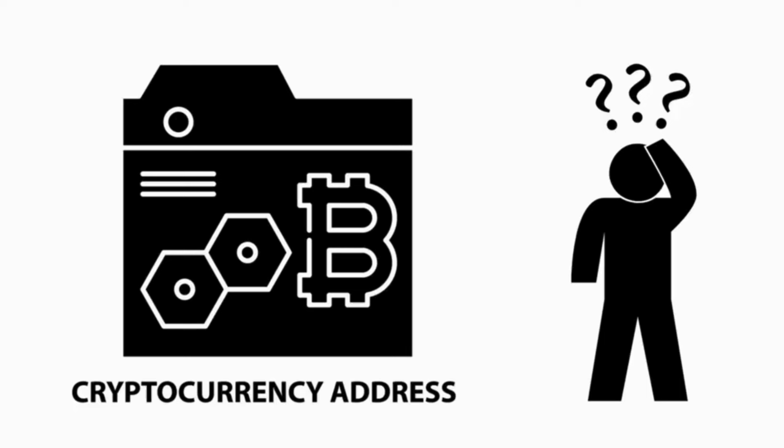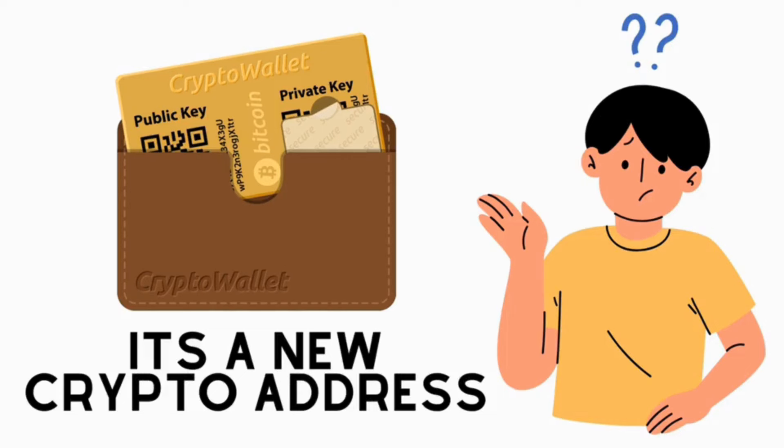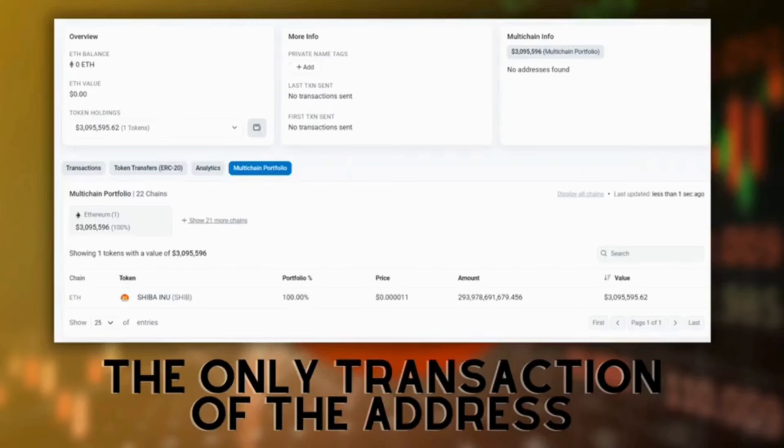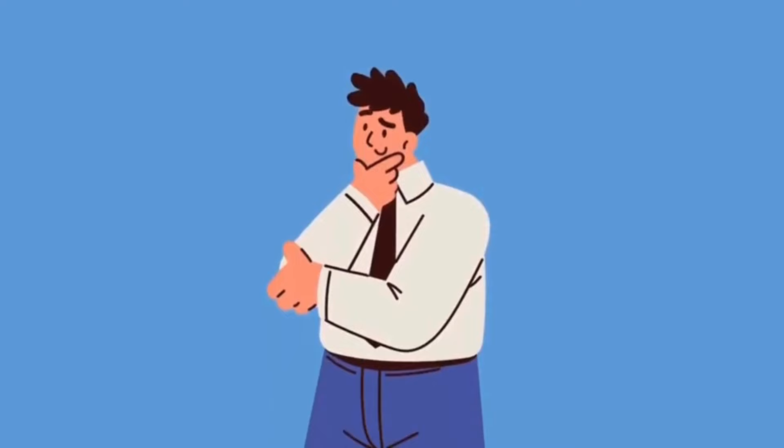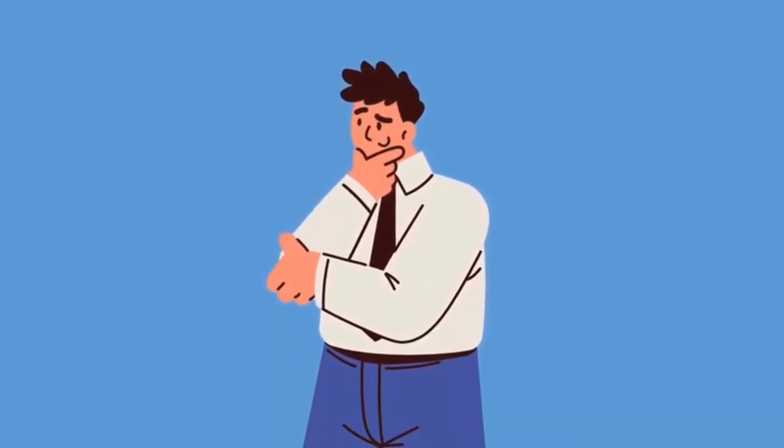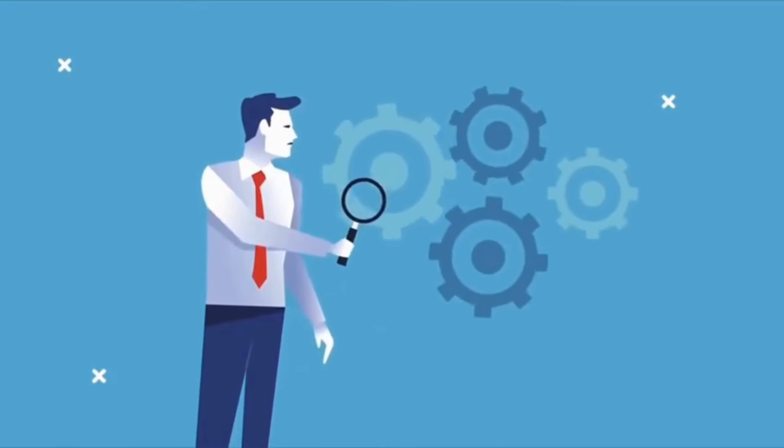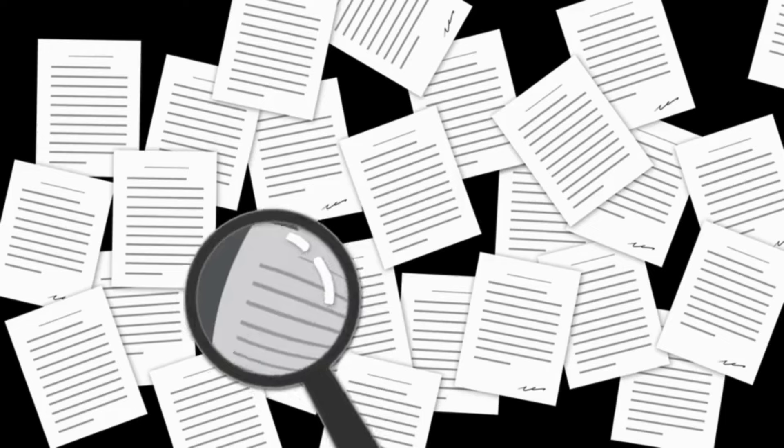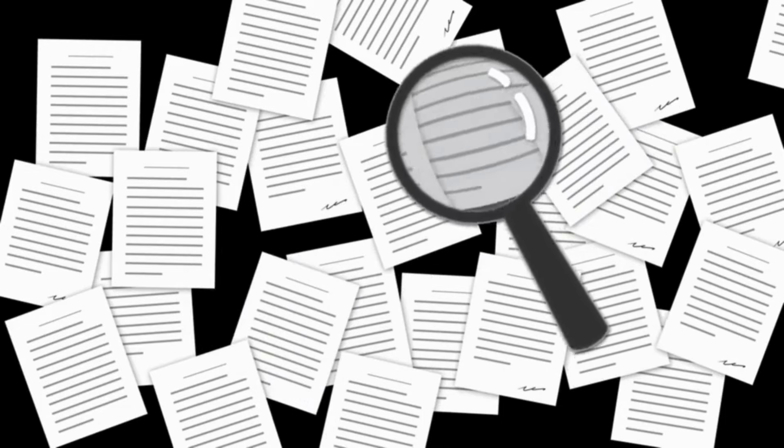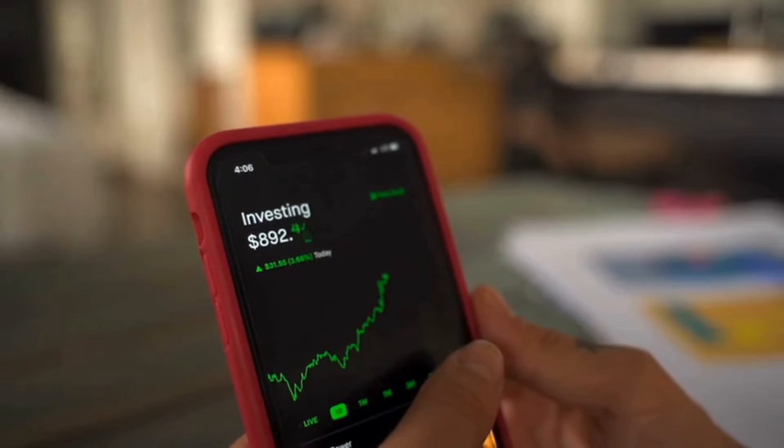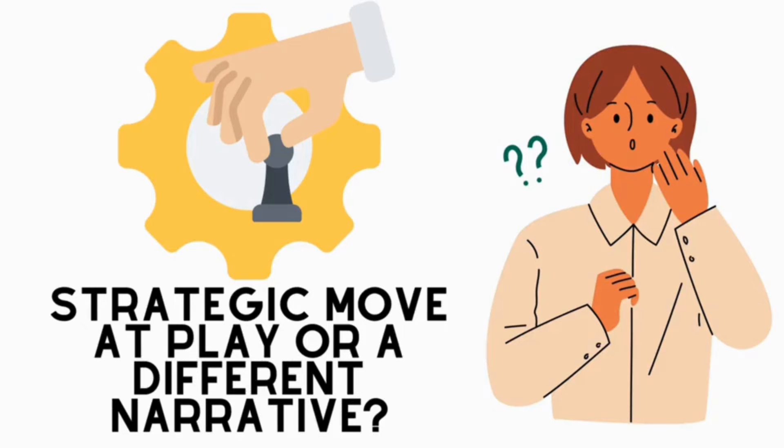The recipient address adds another layer of intrigue to this unfolding narrative. It's not just the sheer volume of Shiba Inu tokens it received. It's the address's newness on the scene that amplifies the mystery. With no prior transaction history, and devoid of any assets other than Shiba Inu, this address stands out as a unique anomaly in the crypto space. The question arises, what could be the motive behind this substantial transfer to a seemingly blank canvas?